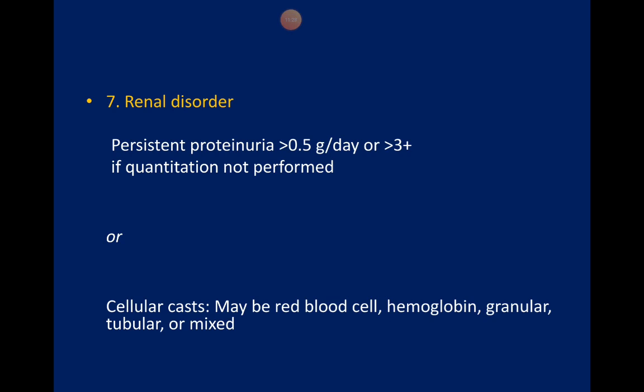Renal disorder is very important. It is essential to keep checking blood pressure of patients with SLE at follow-ups. Urine samples need to be screened for protein, hemoglobin, red cells, or casts — these are features of ongoing renal disorder. Sometimes renal disease can be quite silent, so it is very important to catch and diagnose it even if the patient is not symptomatic at that stage.